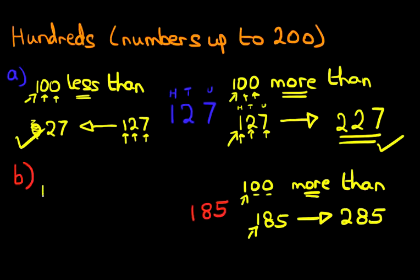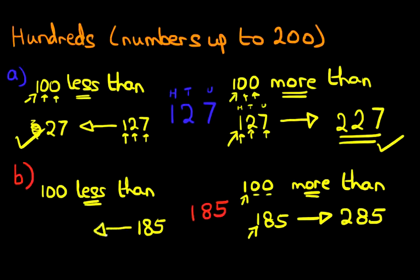Now let's do 100 less than 185. This is quite simple. Let's write the number down: 185. Are we going to count forwards or backwards? Well it's less than, so therefore we're going to go backwards. The five and the eight are not going to change because they're going back by zero. As for the one, the one is going to go back by one. If one goes back by one, it's zero. So this first digit, the one, has become a zero, and the other two remain as they are. So 100 less than 185 is 85.